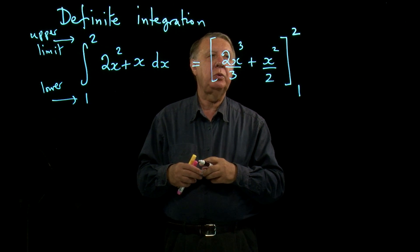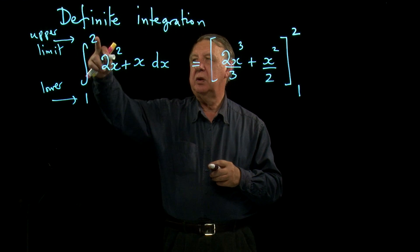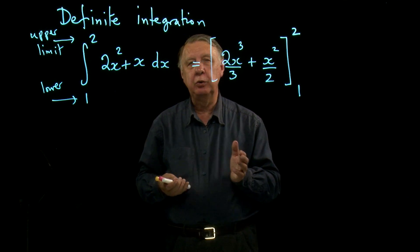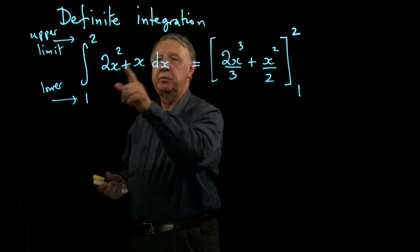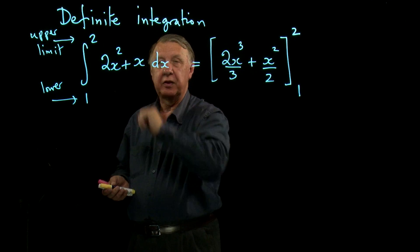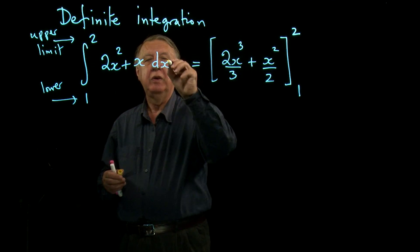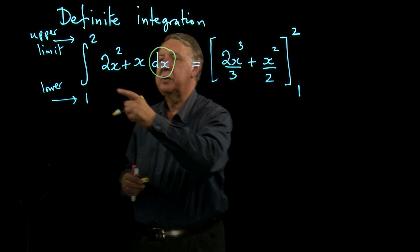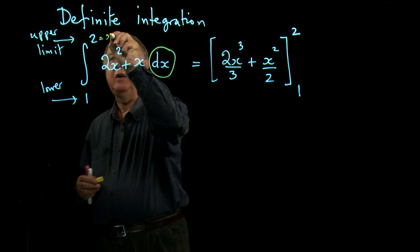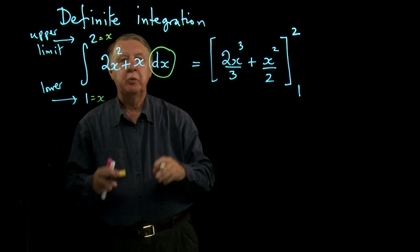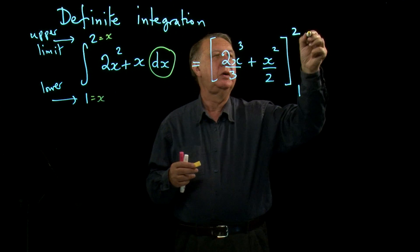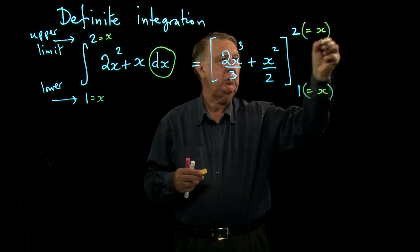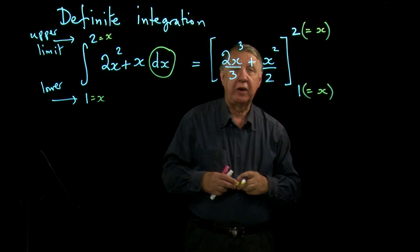Now it's important to realize that these two numbers tie up with the DX. Remember that the DX is there to tell you which is the variable letter, and if it wasn't there and there were other letters floating around here you wouldn't know which the variable letter was. So it's crucial to have that DX there and these two numbers here are actually values of X. We don't write in X equals 2, but you need to remember that these are values of X.